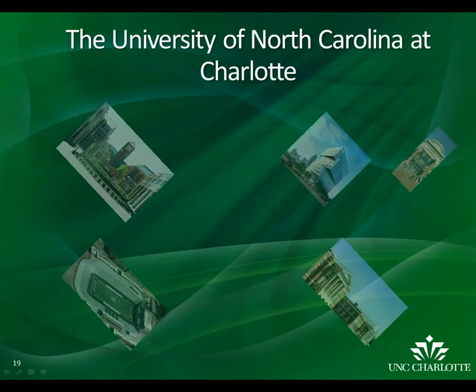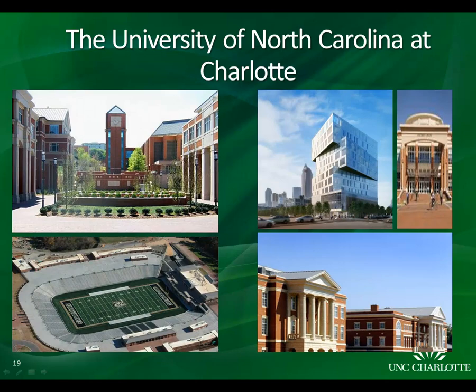UNC Charlotte has assets valued in the billions. We invest in cutting-edge research programs and are committed to educating the next generation. We are the fourth-largest institution of higher education in the UNC system, with one major campus and three smaller campuses. There are over 29,000 students, faculty, and staff at the university, and we have a budget of over $450 million. The campus has over 1,000 acres, over 100 buildings, is 8 miles to uptown Charlotte, and within 30 miles of two nuclear power stations.